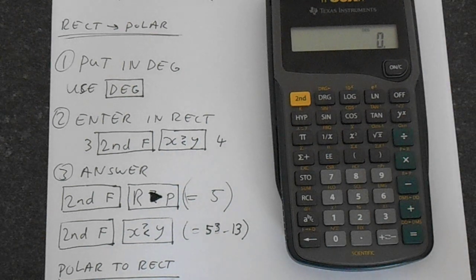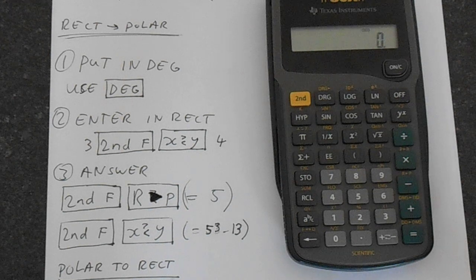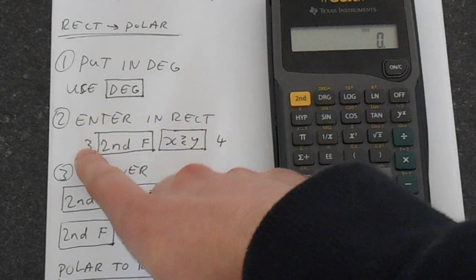So let's enter a number in rectangular form and convert it to polar form. We'll do 3-4 because you've got a basic 3-4-5 triangle, so you can understand what the results are going to be.